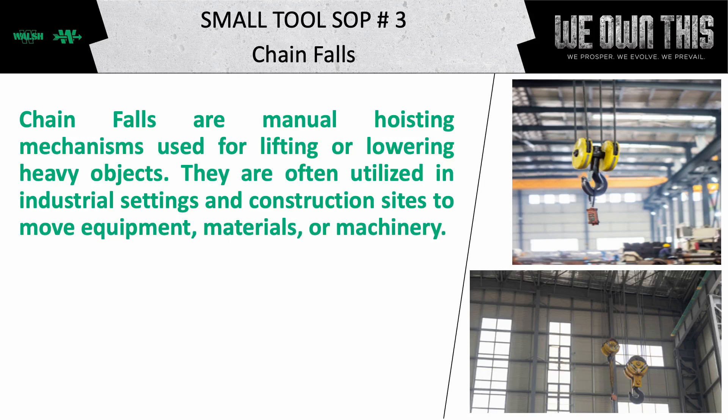Welcome to the Small Tools Standard Operating Procedure Review. Today, we will talk about chain falls. Chain falls are manual hoisting mechanisms used for lifting or lowering heavy objects. They are often utilized in industrial settings and construction sites to move equipment, materials, or machinery.